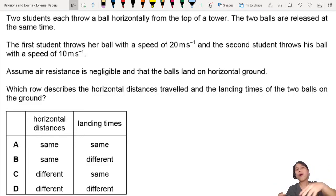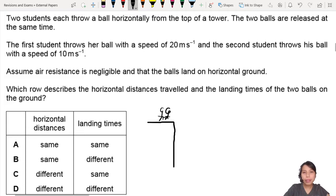Two students throw a ball horizontally from the top of the tower. The balls are released at a certain time. You need to already think of, there's two students. One person throws a ball.